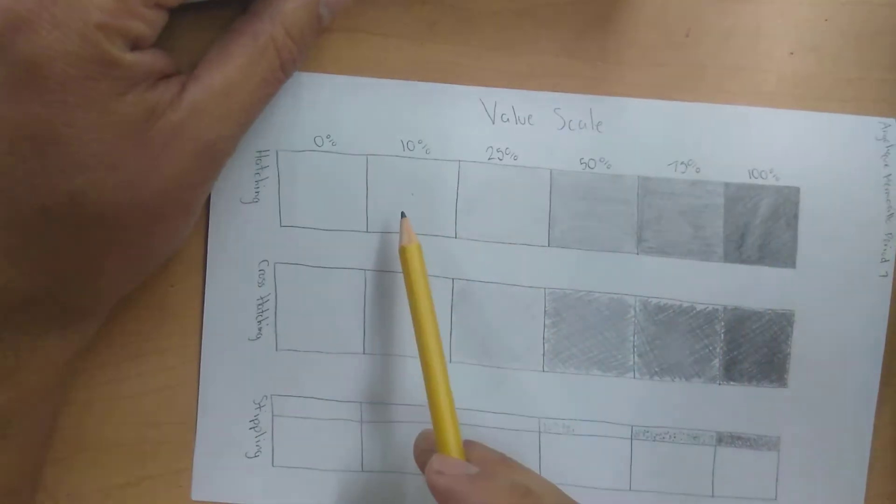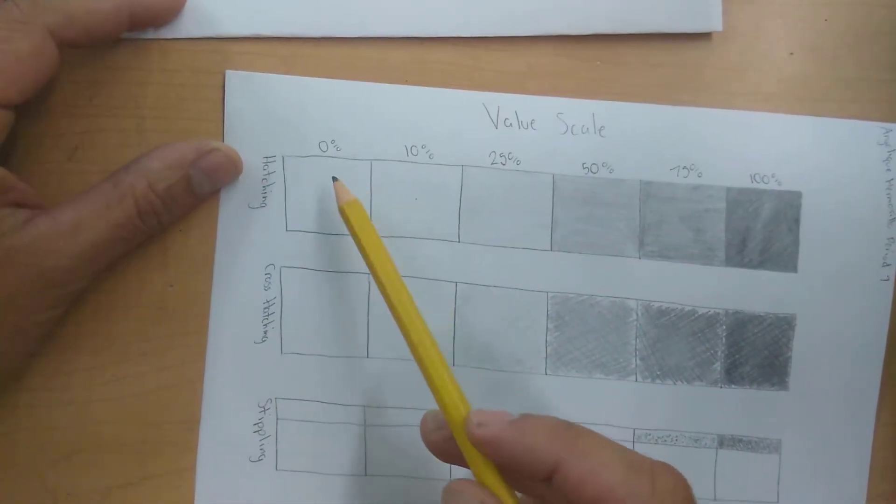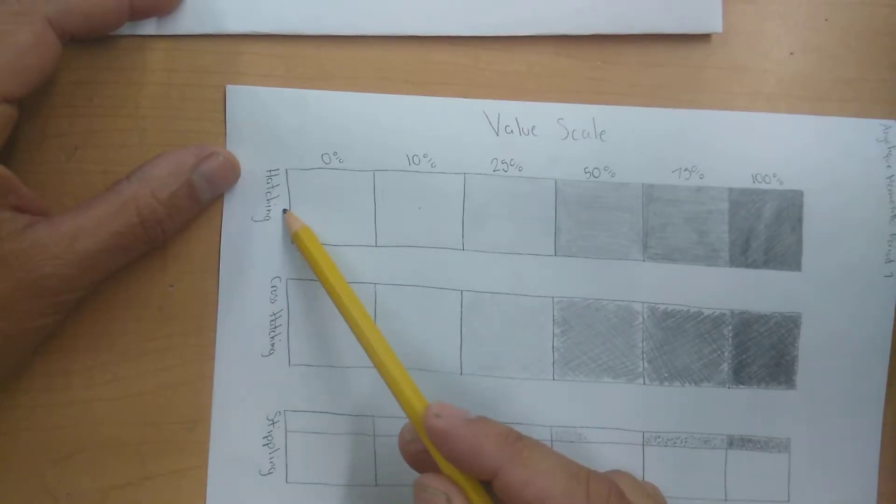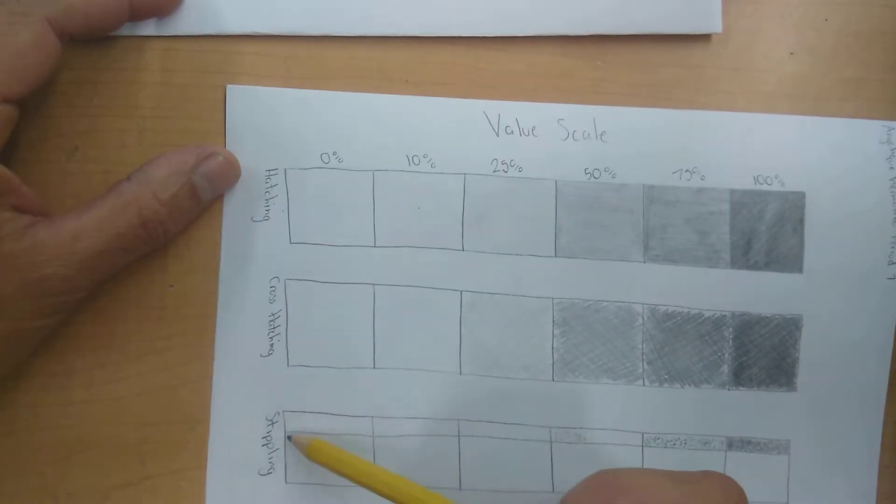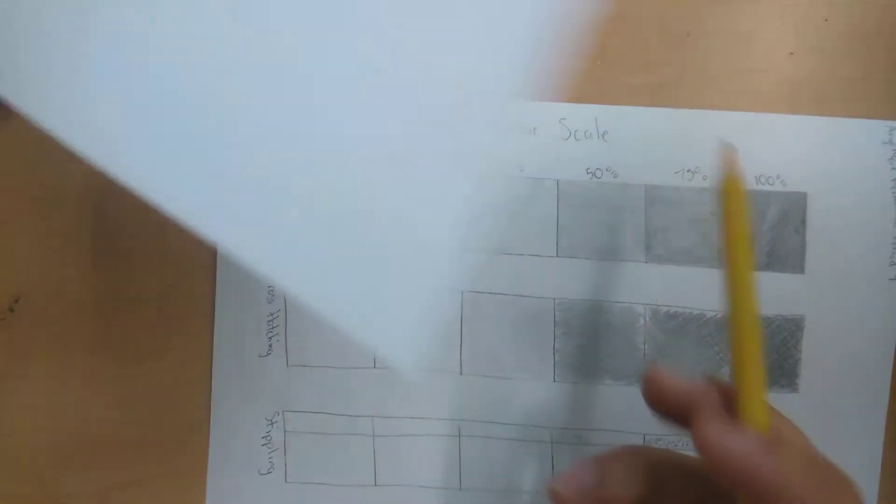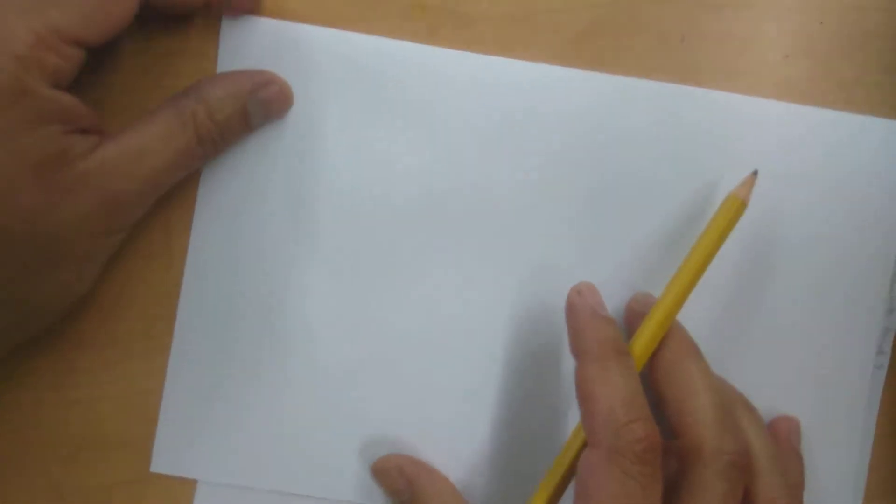Next thing we're going to do when we go into our value scales is we're going to learn about the three different shading techniques. One of them is called hatching, another one is cross-hatching, and the last one is stippling. Let me show you what those look like really quick.